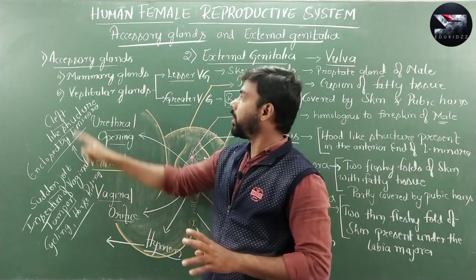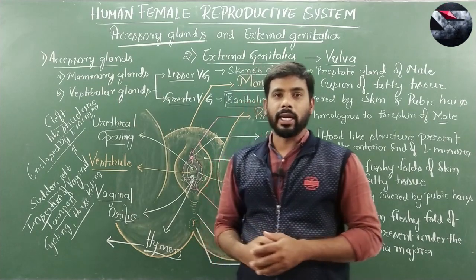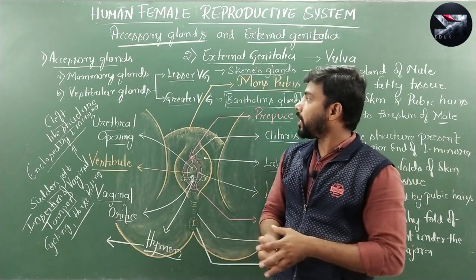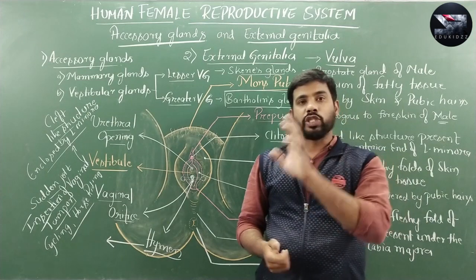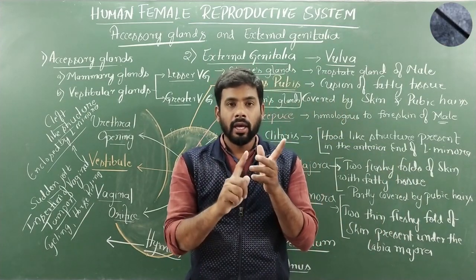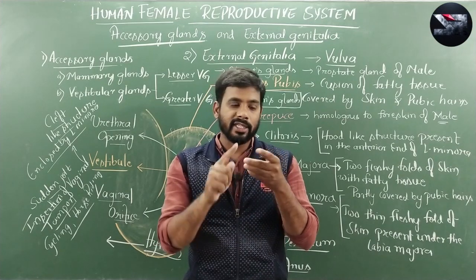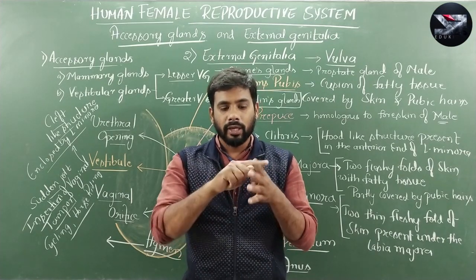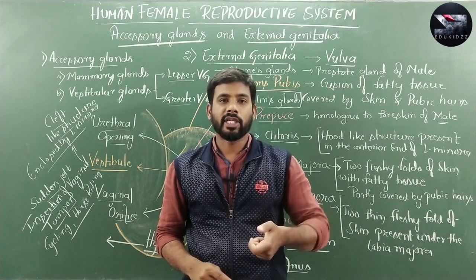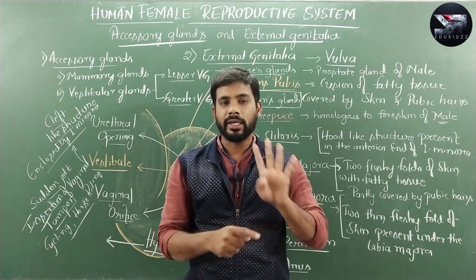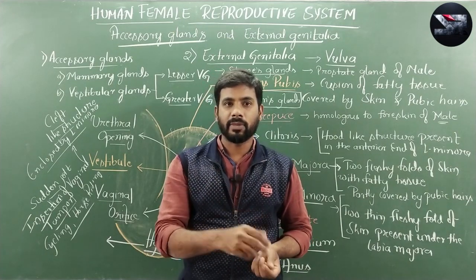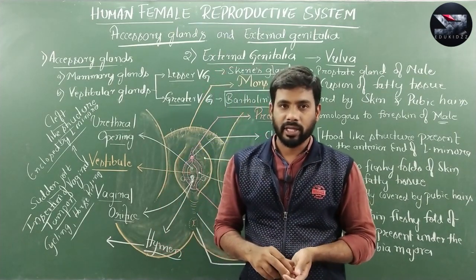This covers female external genitalia, vestibular glands, and mammary glands. The remaining topics — menstrual cycle, hormonal regulation of the menstrual cycle, oogenesis, and sectional view of the ovary — will be covered in the next class. Thank you.